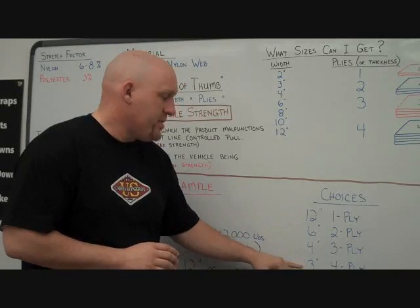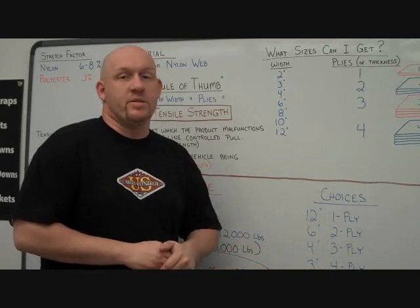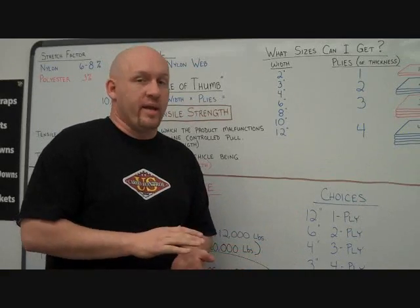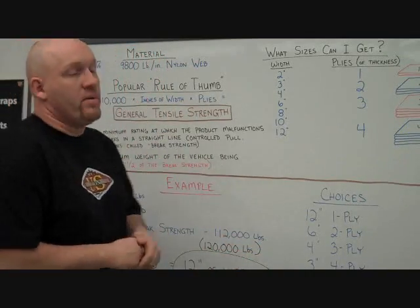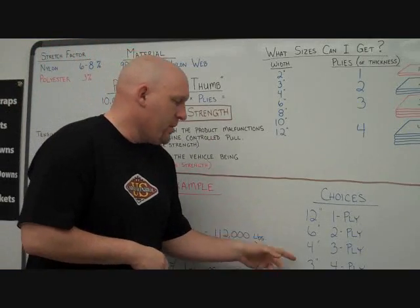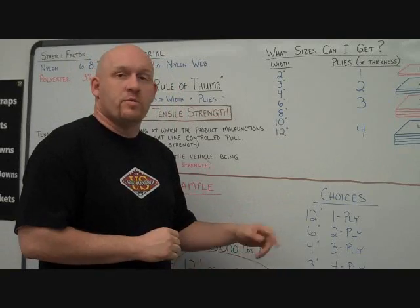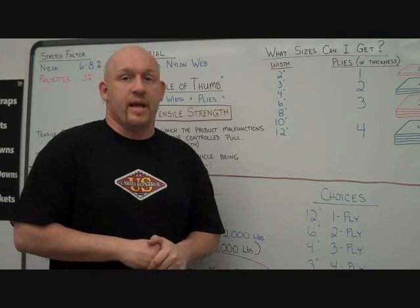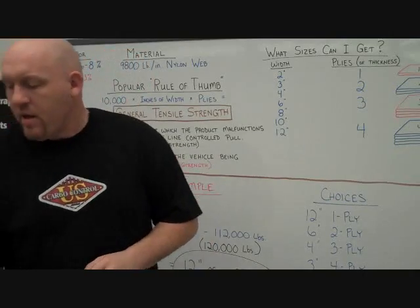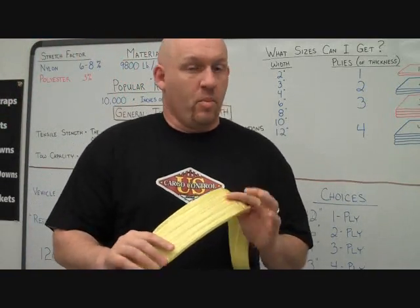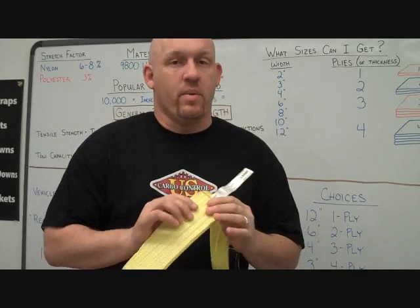As we go down in widths and higher in plies, these strengths of these recovery straps will tend to weaken as opposed to the 10,000 pound general rule of thumb per inch. Typically they will drop down to like 9,600 pounds per inch, 9,200 pounds per inch as you start sewing these plies together, because the stitching of the recovery strap actually weakens the webbing. So the more stitching you have, the weaker the webbing becomes.